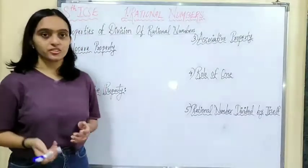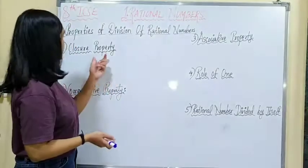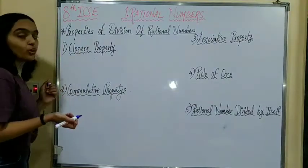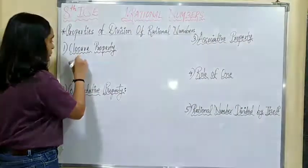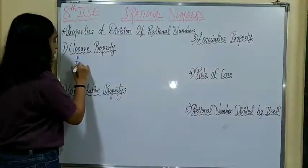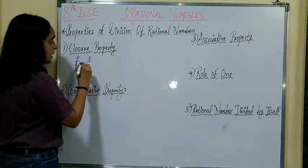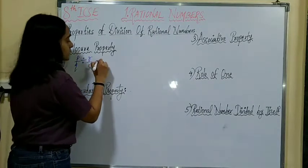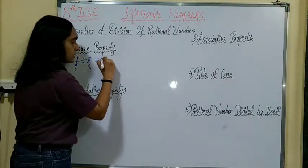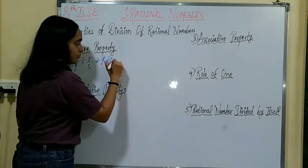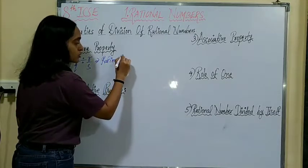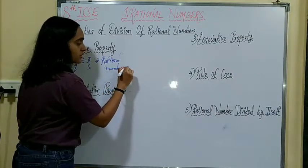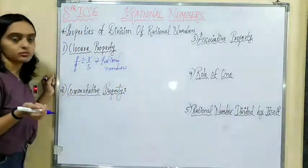Properties of division of rational numbers. The first property is closure property. If you have any rational numbers, say P upon Q and R upon S, then the division of both these rational numbers is again a rational number. So, division of rational numbers is said to be closed.